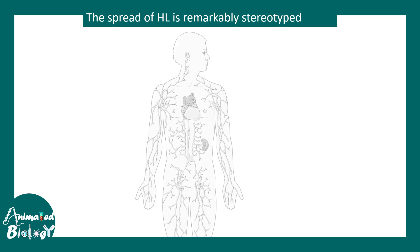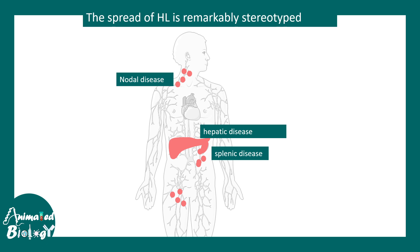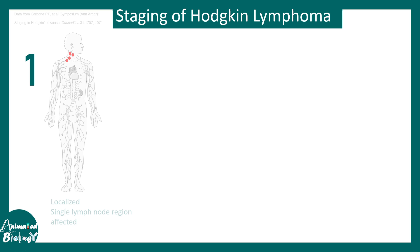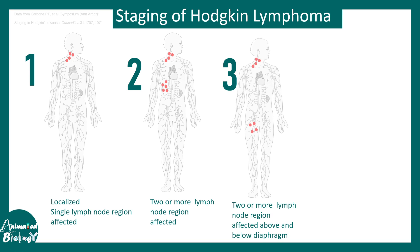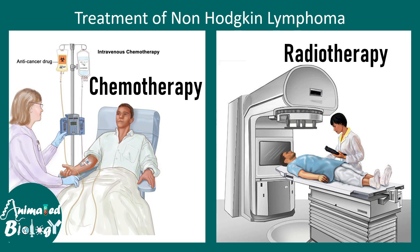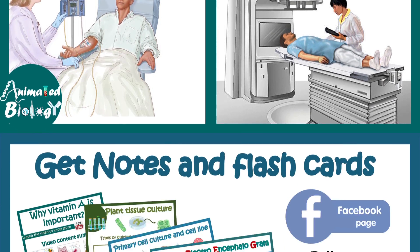When it comes to the spread of Hodgkin's lymphoma, it follows a stereotypic pattern starting as a nodal disease, then affecting the spleen, then the liver, and eventually the bone marrow. There are four stages: Stage 1 is localized to one lymph node region; Stage 2 involves two or more lymph node regions; Stage 3 involves two or more lymph node regions on different sides of the diaphragm; Stage 4 is widespread disease involving the spleen, liver, and bone marrow. Better prognosis correlates with earlier stage and better survival. Chemotherapy and radiotherapy are the treatment options.